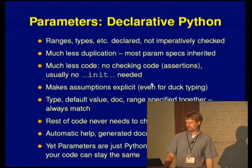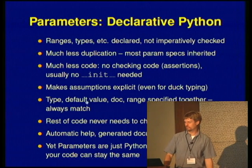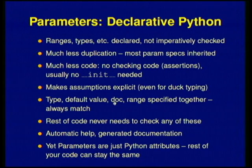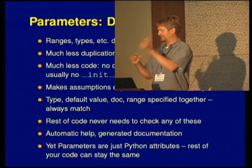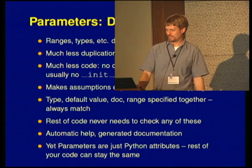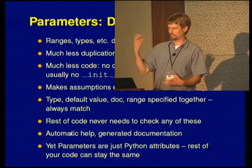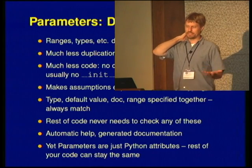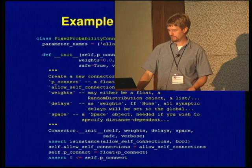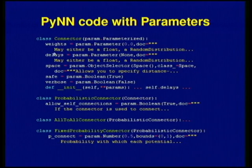When you specify anything, you'll always get the type, the default value, the documentation, and the range — all in one spot. They're going to match; they're right next to each other. You change one, you'll notice it doesn't match. There's no text saying 'it's allowed to be one unless it's a Tuesday' — it's right in the code. And for free you can get automatic help from the command line, generate documentation, and so on. But key is that these are still just Python attributes — you access x.delays and you get the value; the rest of your code doesn't care except that it doesn't need any checking.